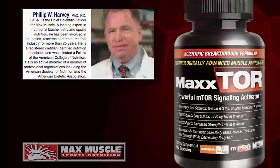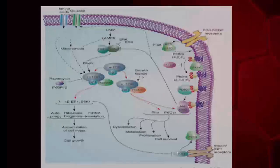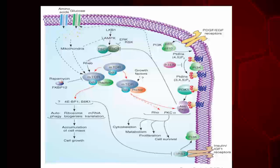For the biochemists out there, this is a picture of the mTOR pathway — you can kind of see it in the middle. PA, right in the middle there, is mTOR. Phosphatidic acid can directly enter the muscle cell and bind to mTOR to activate the mTOR gene and the signaling pathway.